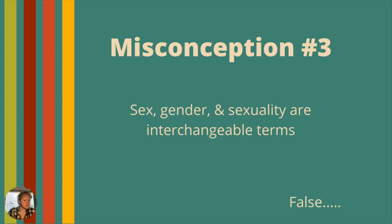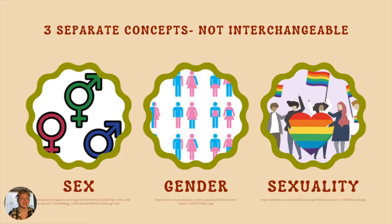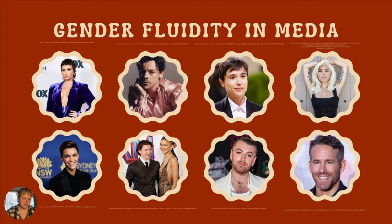The third misconception: are sex, gender, and sexuality interchangeable terms? This is false. Sex is what we are biologically born with. Gender is how we perceive ourselves, and also how we portray ourselves to society — those can be different things and fluctuate day to day. Some days I have very masculine days, some days feminine, some days I like to be androgynous. And sexuality is who we're attracted to physically and emotionally. All three are very different concepts, and all three are very important.